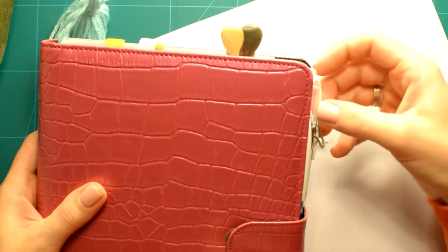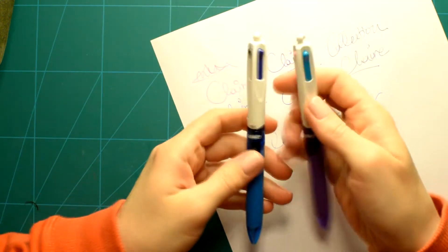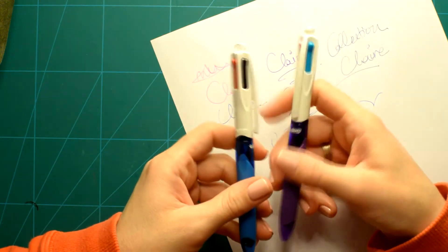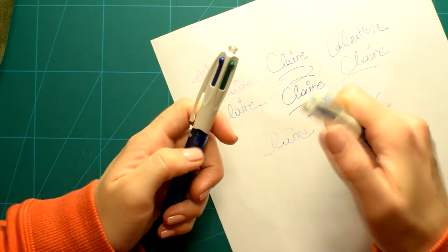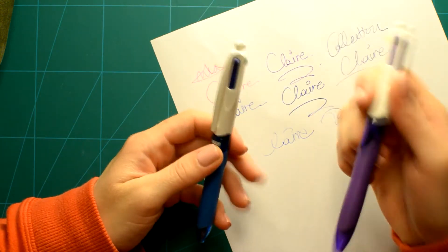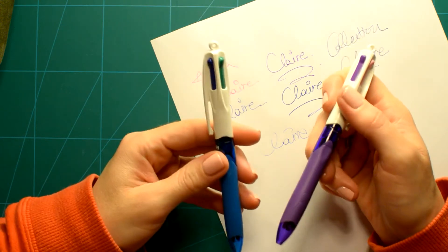I have two more pens in my planner and these are the big ones. They are multicolored. Each has four colors. This one it has the lighter colors and this one the darker.